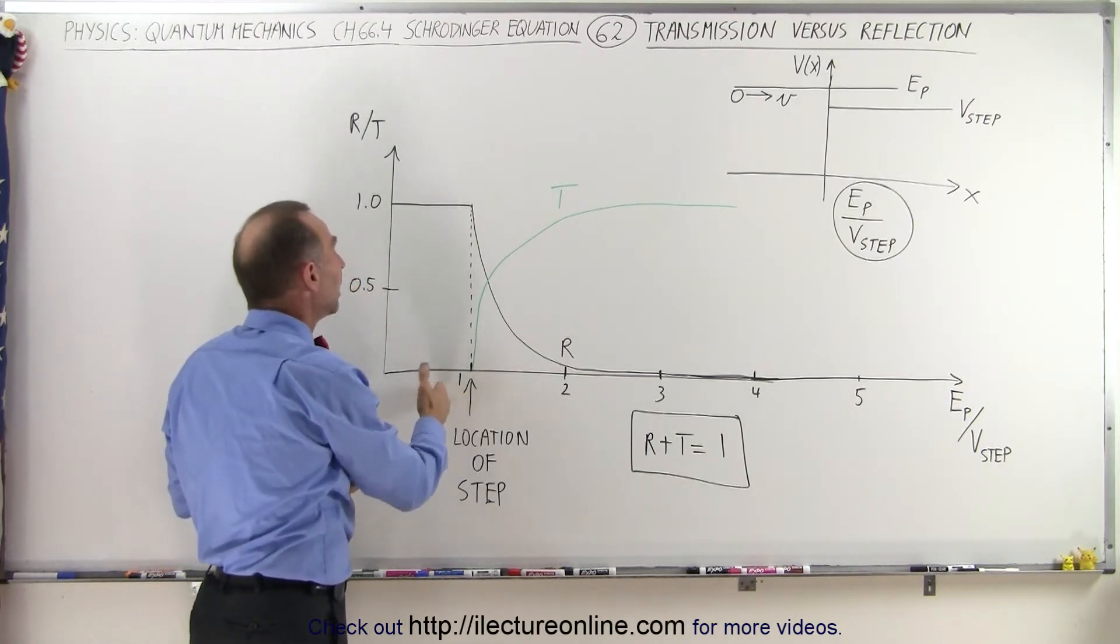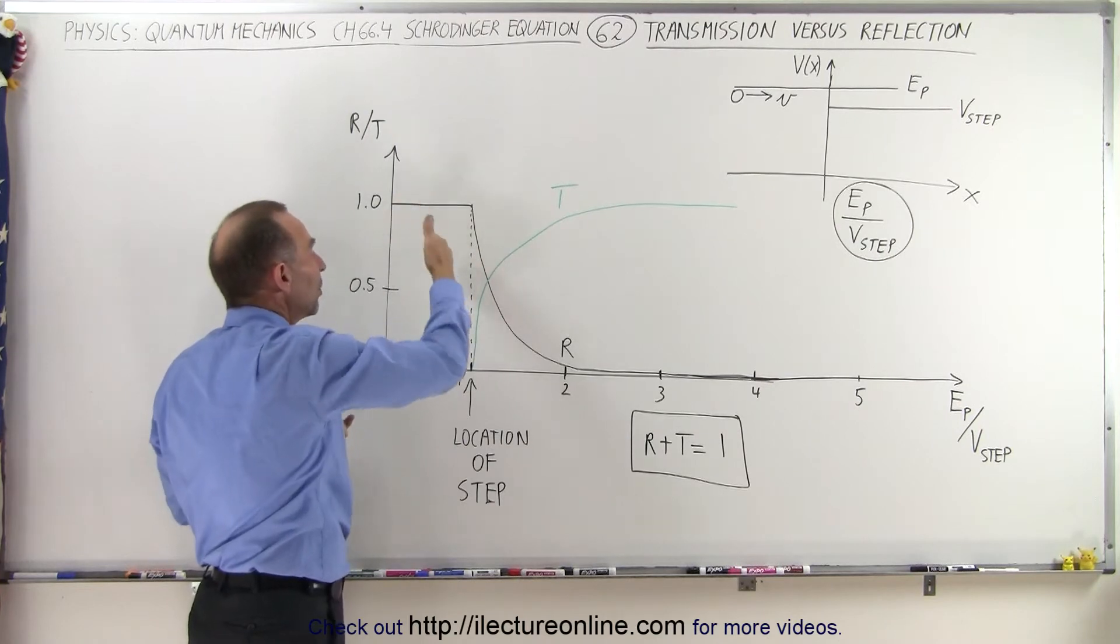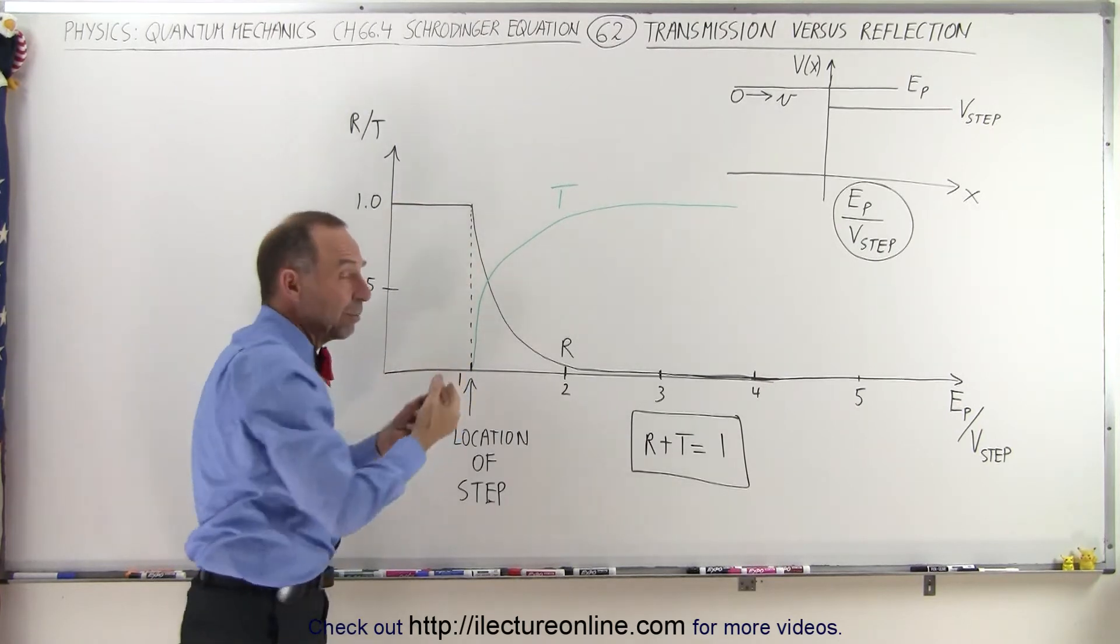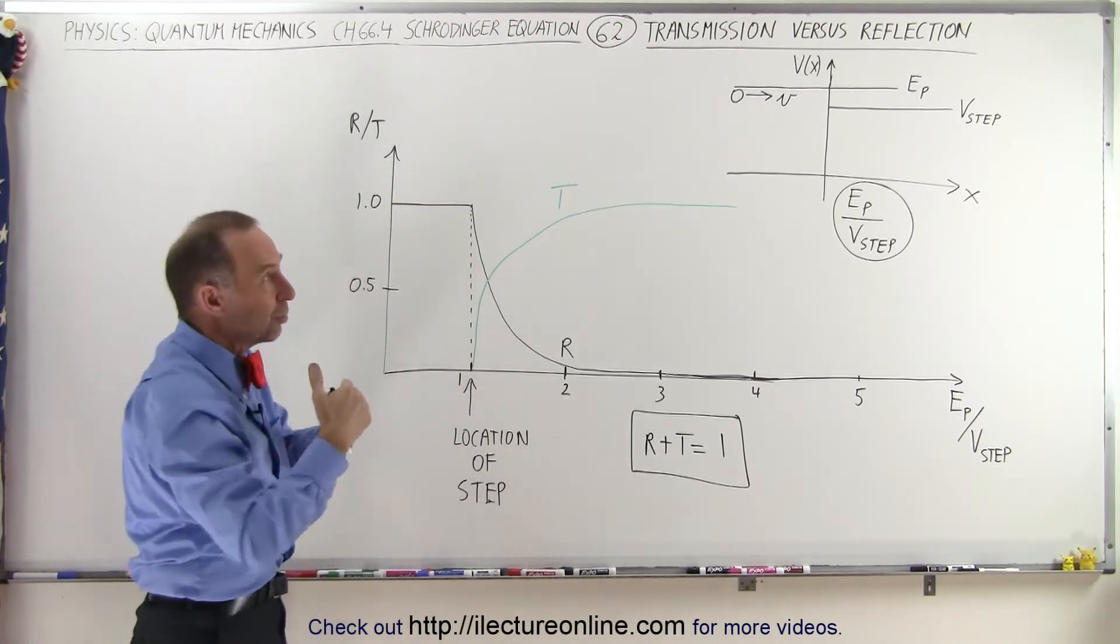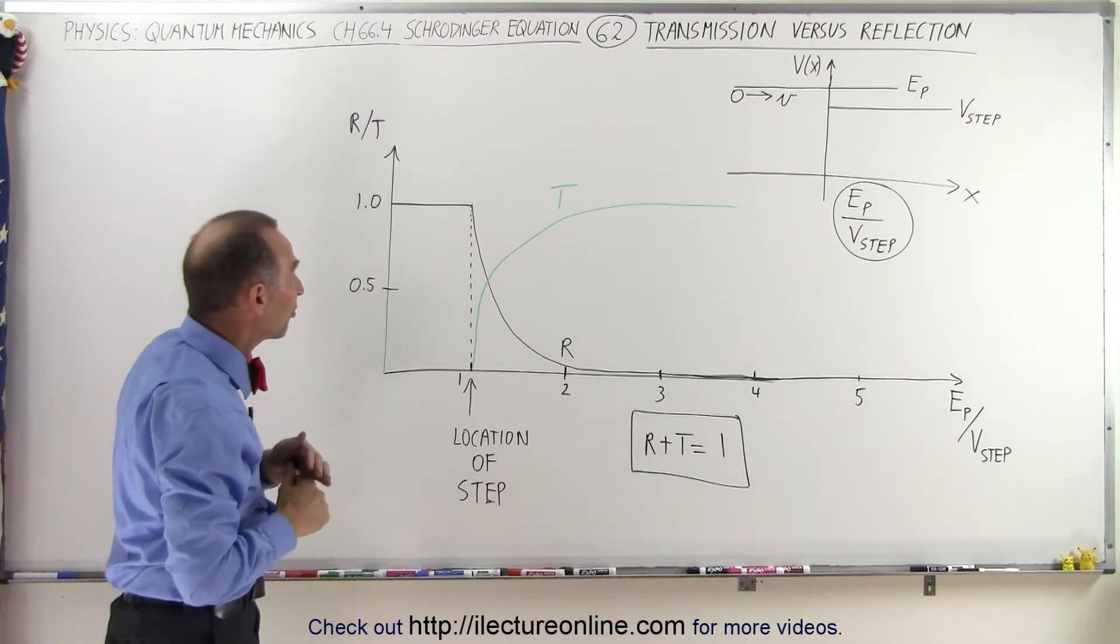If we're at less than 1 over here, then we would say that the particles would be reflected because there's less energy in the particle than you need to overcome the barrier or the step.